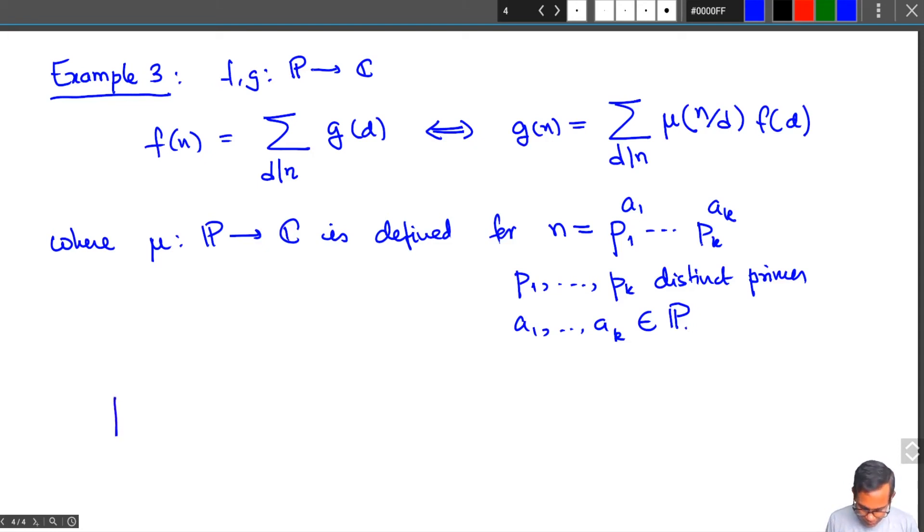Then μ is defined by μ(n) = (-1)^k if a₁ = ... = aₖ = 1, and zero otherwise. So this is a number theoretic definition depending on the prime factorization of n. μ is zero if n is divisible by the square of any prime, otherwise it's plus or minus one.